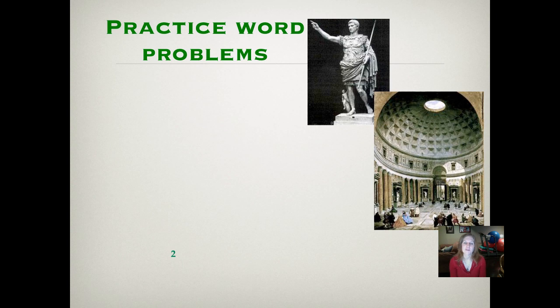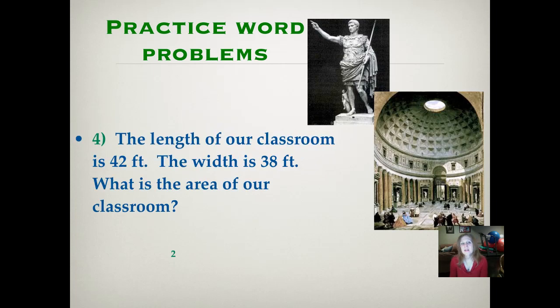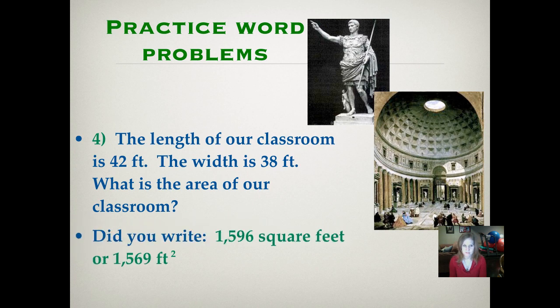Here are some practice word problems. That is a statue of Vitruvius when he was a soldier. He was actually a soldier for both Julius Caesar and Augustus Caesar. So he actually served under two Caesars in ancient Rome. And that is the inside of the pantheon I was telling you about. If the length of our classroom is 42 feet and the width is 38 feet, what is the area of our classroom? Did you write 1,596 square feet? Remember, area equals length times width. So area equals 42 times 38, which equals 1,596. We're getting some good multiplication practice too in this lesson.